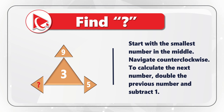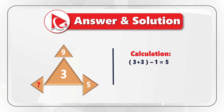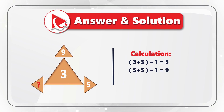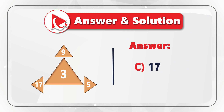To calculate the next number in the sequence, you need to double the previous number and subtract one. The first number is three; three plus three minus one equals five. Then five plus five minus one equals nine — that's how we got the number in the top small triangle. Now for the missing number: nine plus nine minus one equals 17. So the correct answer is choice C, 17.